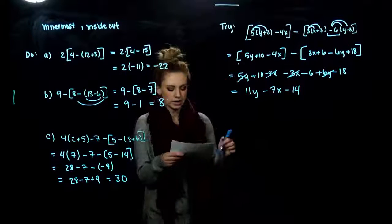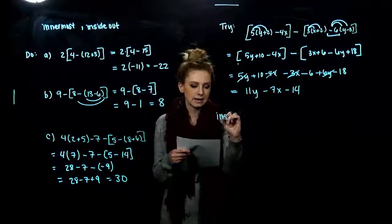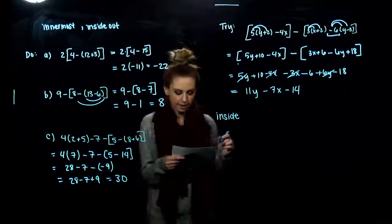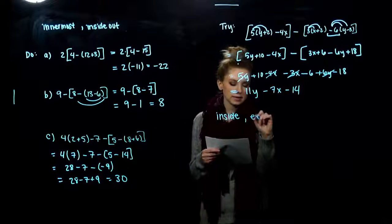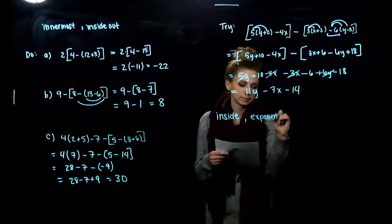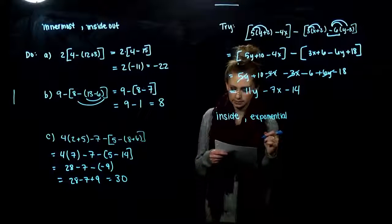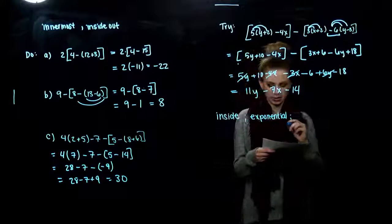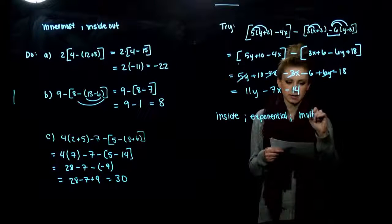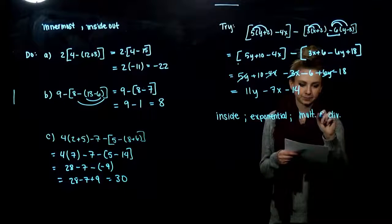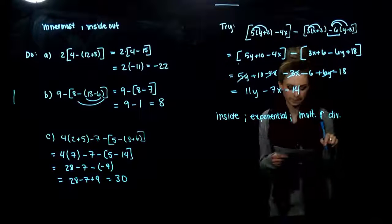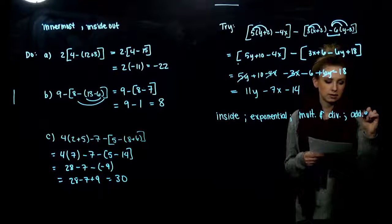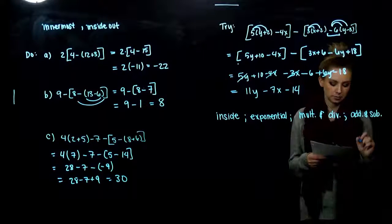Do all of the calculations inside of the grouping symbols first before operations outside. Evaluate all exponential expressions. Then what two operations do we do together? Multiplication and division from left to right. Then lastly, addition and subtraction from left to right.